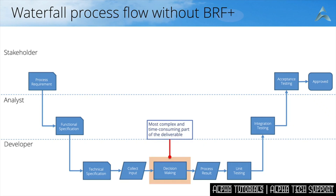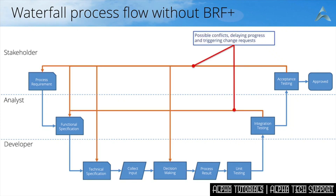I want to bring your attention to a specific step in this entire process — the decision-making part. This is the most complex part where the most mistakes are potentially being made during a development cycle. Knowing that the decision-making part is the most likely area where something might go wrong, the analyst might only notice it when integration testing starts. If the analyst doesn't notice it, the stakeholder will probably see it during acceptance testing. These orange conflict lines bring you back into the process and you have to follow the subsequent steps again — the more often these orange arrows are used, the longer it takes for the entire development to be approved.